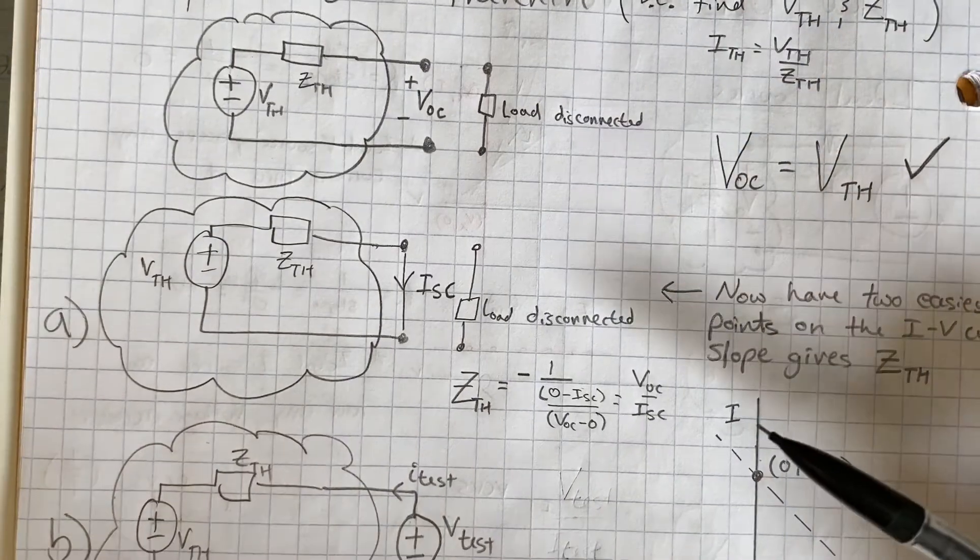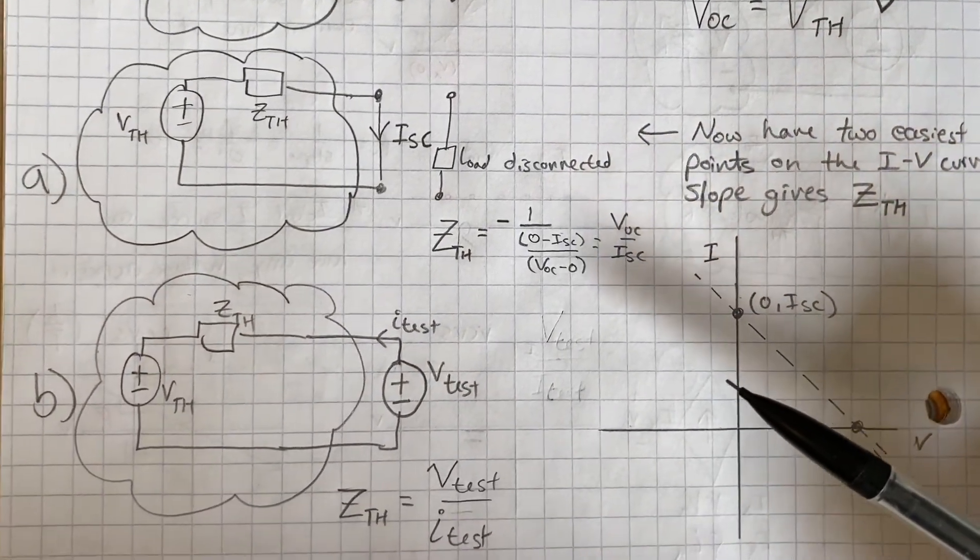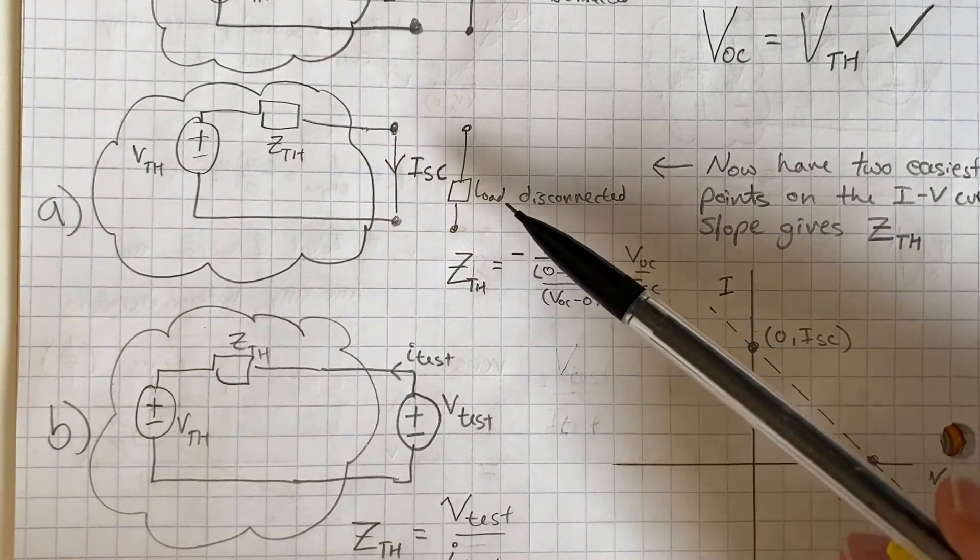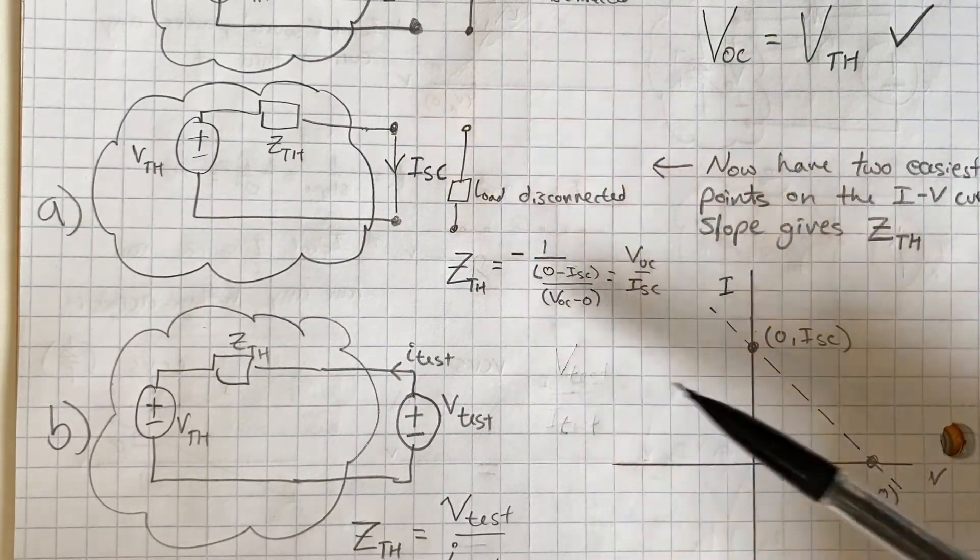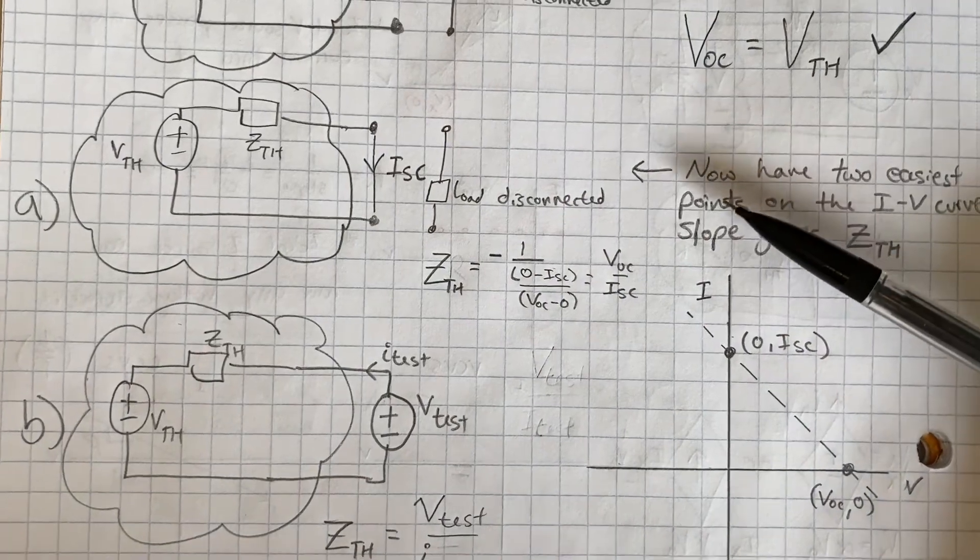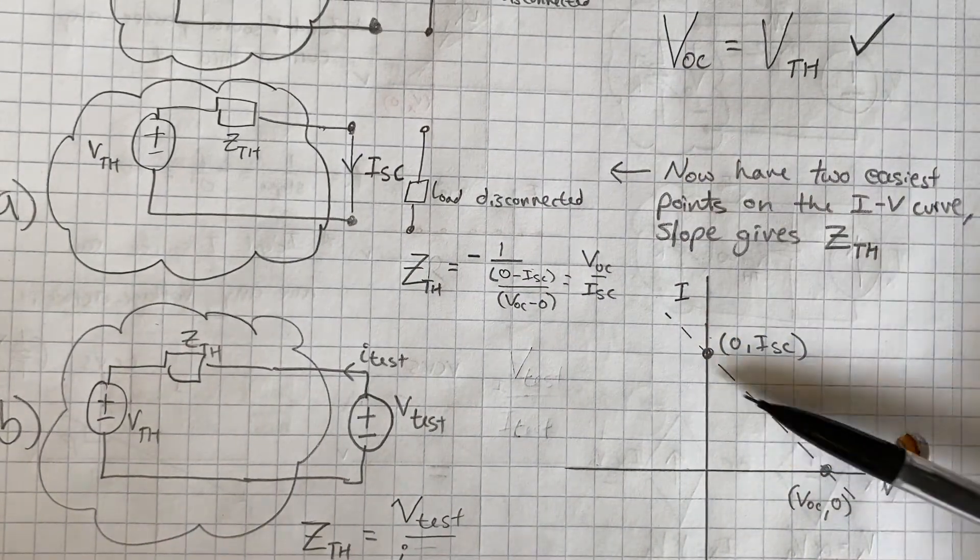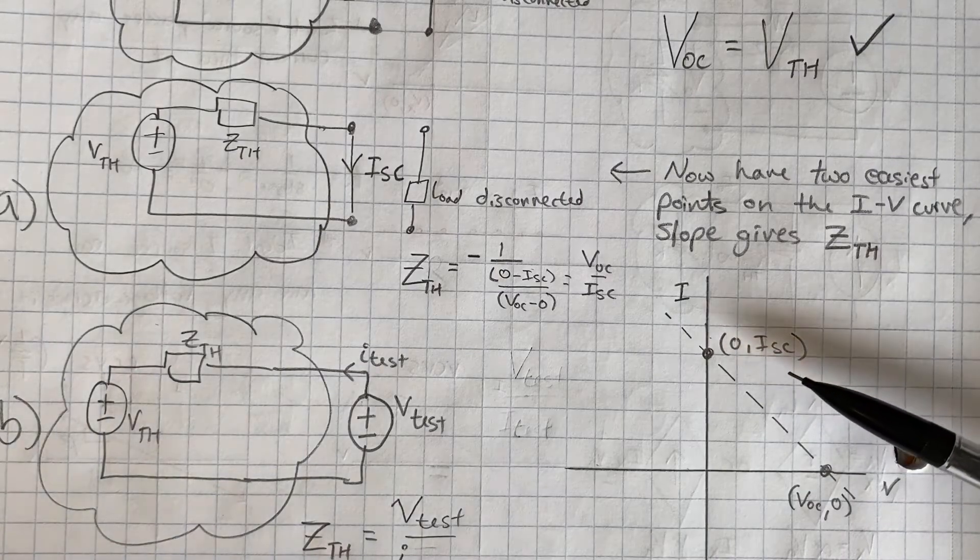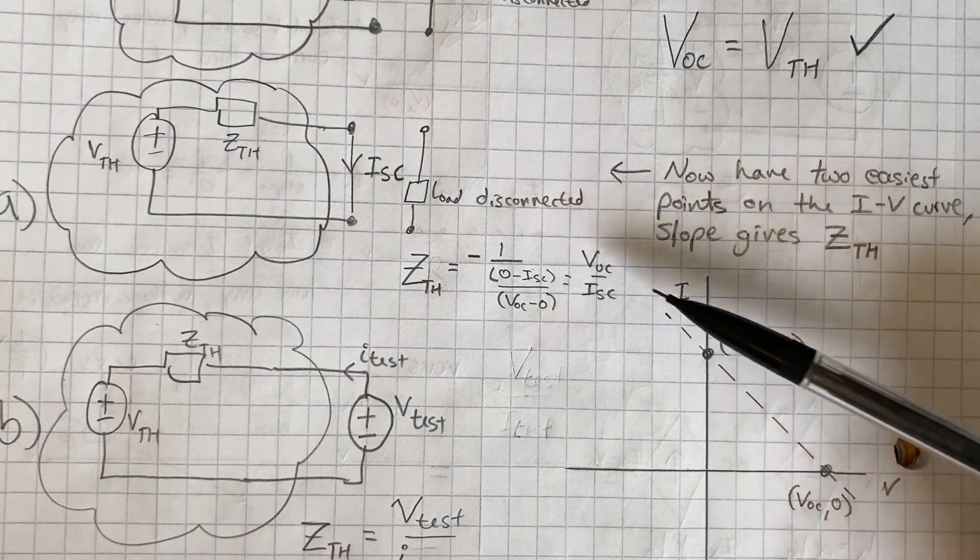What about the Thevenin impedance? Well, there's three ways. The first way is to find the short circuit current. And then we have two points on this IV curve. And we know the slope will give us the impedance. I have another video on that as well to prove it. But that's one easy way.